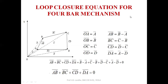The loop closure equation for the four-bar chain mechanism — this is a planar mechanism because it is represented in one single plane on the x and y axis, that is the Cartesian coordinate system. Such a mechanism is called a planar mechanism.